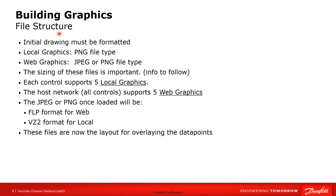A little background on the file structure: initial drawings must be formatted as either PNG or JPEG. For web graphics we want a JPEG or PNG file. The size is important — for the host network, all controls support up to five web graphics. They can be either JPEG or PNG, and sizing matters; we want to keep it less than one megabyte because it resides in the control and has to be pulled back to your computer.